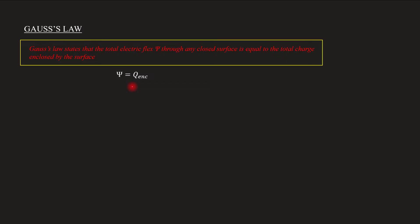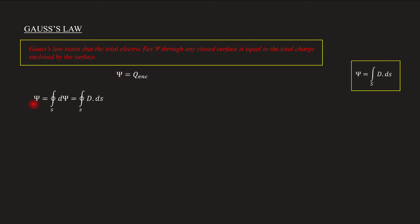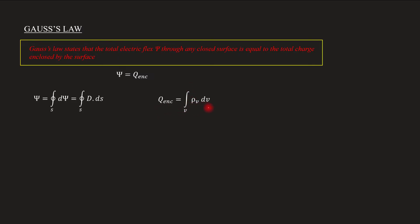Let's talk about what this means. The flux in the expression — phi is equal to the integral over S of D dot dS. So the left-hand side is phi equals the integral over S of D dot dS. And Q enclosed is equal to the integral of rho_v dV.